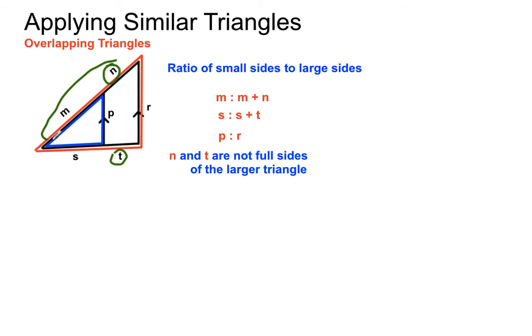It's almost like M and N, those sides there, and the S and T sides work on one system, and P and R work straight out as a basic ratio. So be really careful with the overlapping triangle type questions. It's easy to get them wrong.